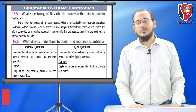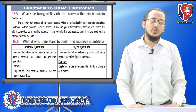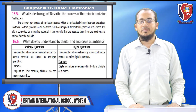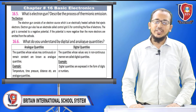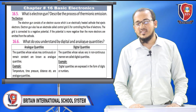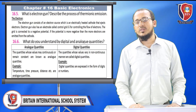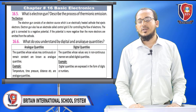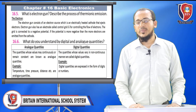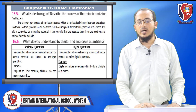Question number 16.6: What do you understand by digital and analog quantities? Analog quantities are those whose values may vary continuously or remain constant — for example, temperature, time, pressure, and distance are analog quantities. Digital quantities are those whose values vary in a non-continuous manner; for example, quantities expressed in the form of digits or numbers are digital quantities.